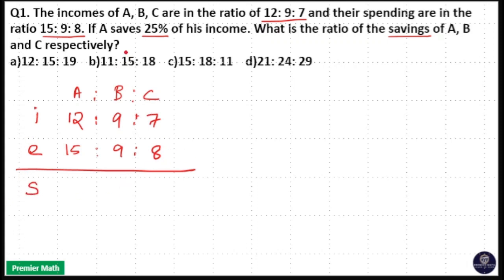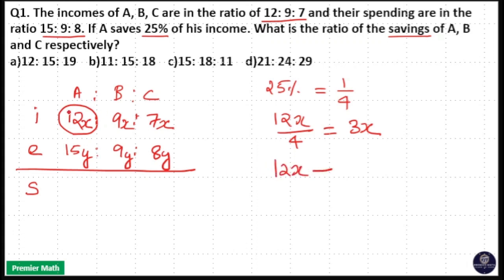Here they are saying A saves 25 percentage of his income. 25 percentage means 25 by 100, that is 1 by 4. So if I take income in the factor of x and expenditure in the factor of y, that means A saves 12x by 4, that is 3x. That means 12x minus 15y, income minus expenditure, is A's savings, that is 3x.